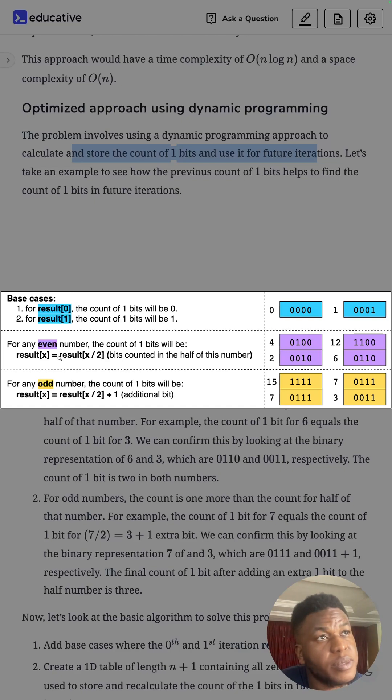For any even number, the count of one bits will be equal to whatever it was for half the number. For instance, the number of bits in 4 will always equal what's in 2, and the number of bits in 12 will always equal what's in 6.